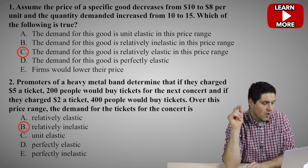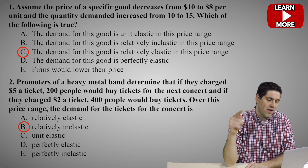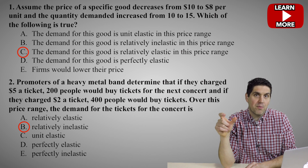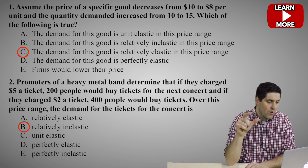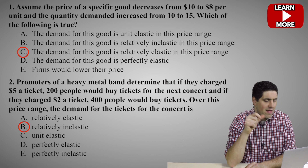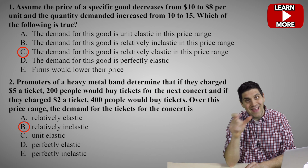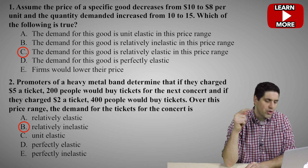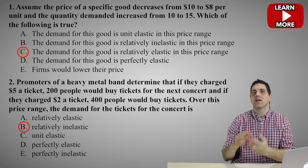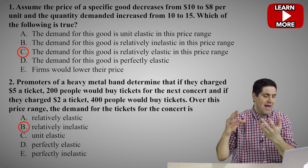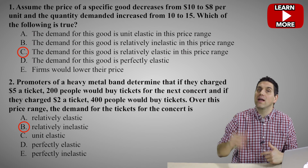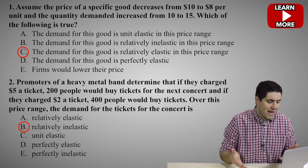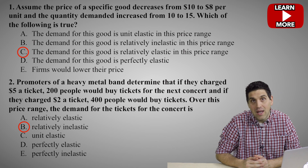A quick bonus round: what if the price of tickets fell down to $2, but 500 people showed up? The total revenue at the beginning was $1,000, and the total revenue ended up again at $1,000. That's called unit elastic. Unit elastic means that the total revenue doesn't change — if the price goes down, total revenue stays exactly the same.